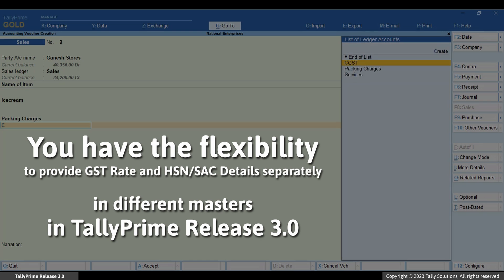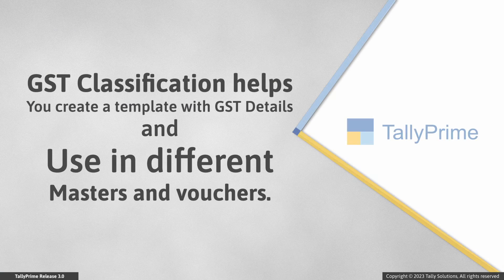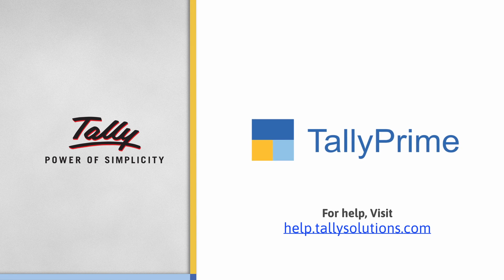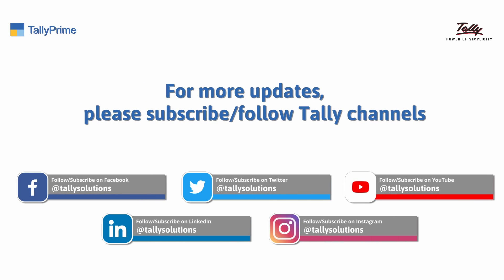As you saw, you have the flexibility to provide GST Rate and HSN or SAC details separately in different masters in Tally Prime. GST Classification helps you create a template with GST Rate and HSN or SAC details that you can use in masters and vouchers as needed. Moreover, during voucher creation, you can identify the source of the values and override if needed. Thank you. To know more about Tally Prime features, visit help.tallysolutions.com. Subscribe to Tally Solutions channel for the latest videos.